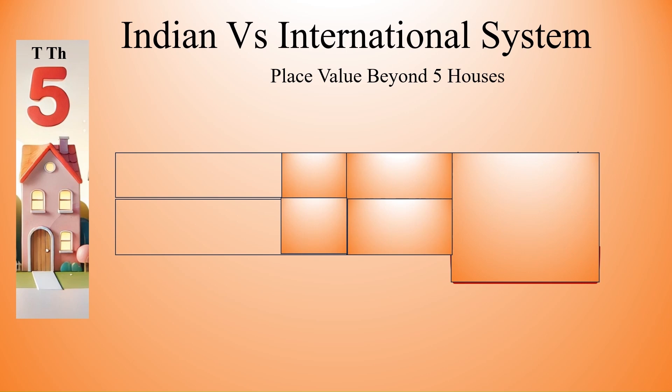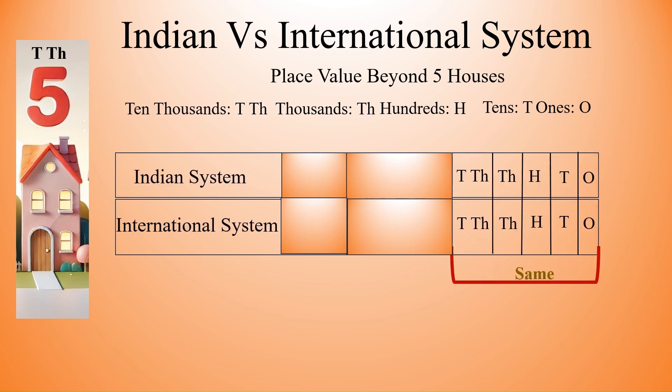Place value beyond 5 houses. We did up to ten thousand using the 5 houses. Now we have to know beyond these 5 houses. Numbers larger than 99,999, that is from 6 digits onwards, the naming differs in the Indian and international systems. Here are some short forms that I am going to use to compare Indian and international systems. So here in Indian system and international system, ones, tens, hundreds, thousands, and ten thousands, up to that it is same.